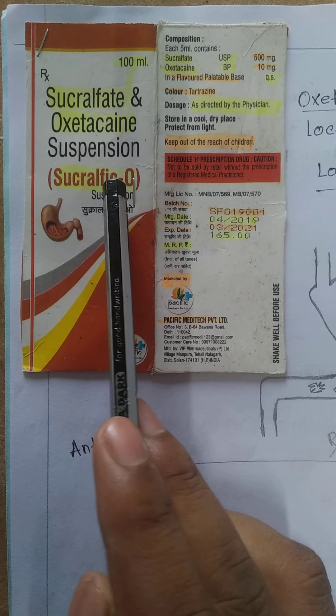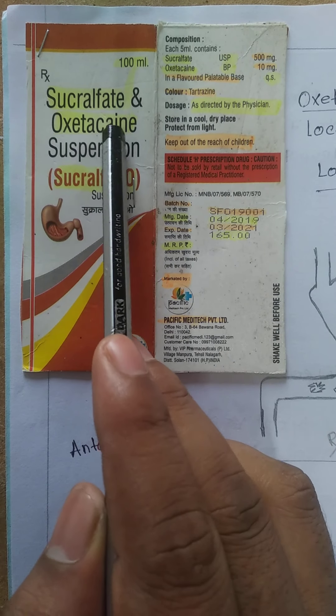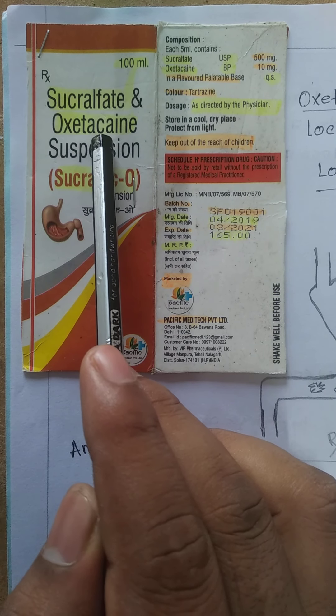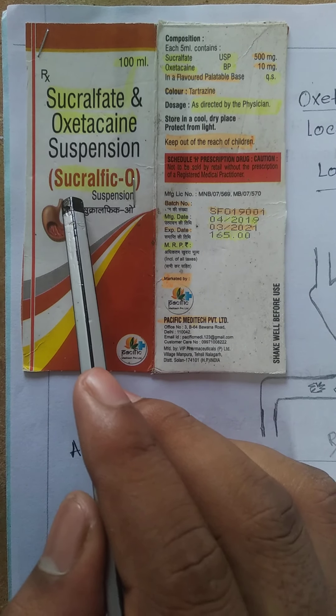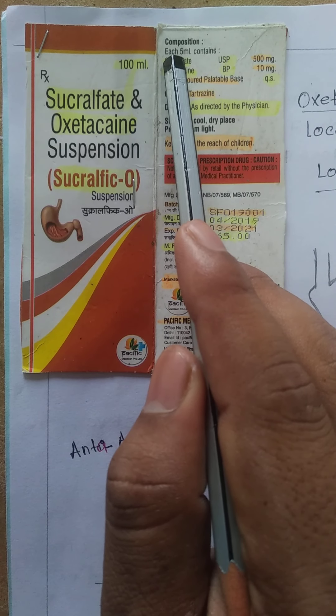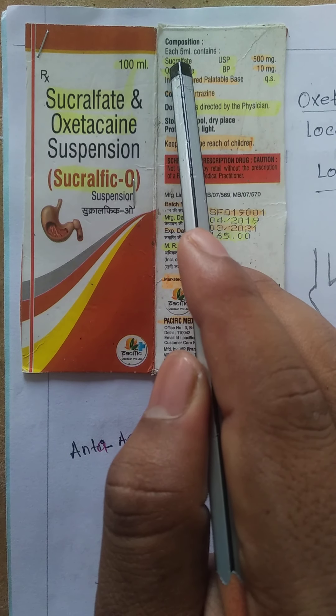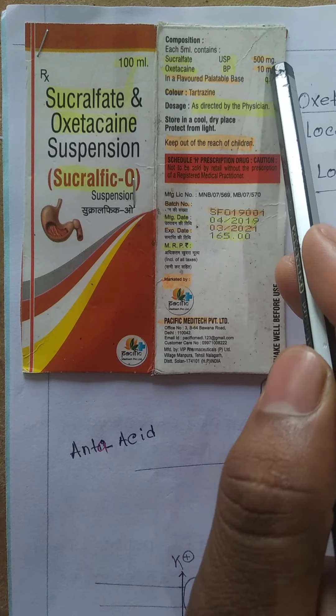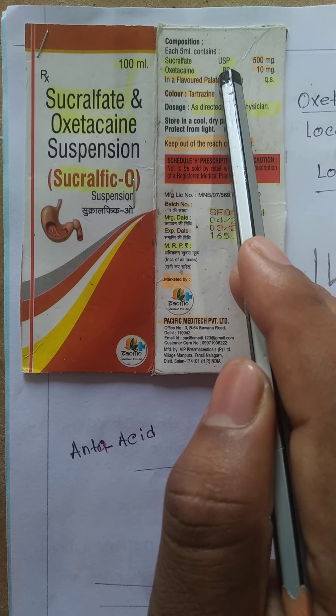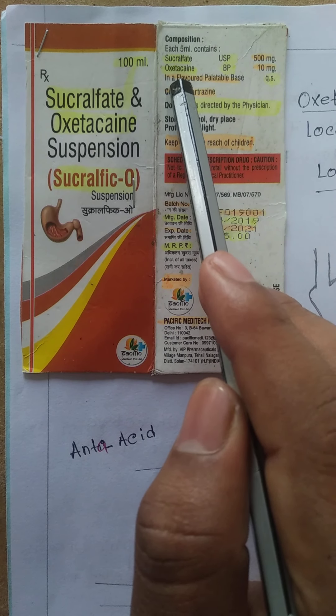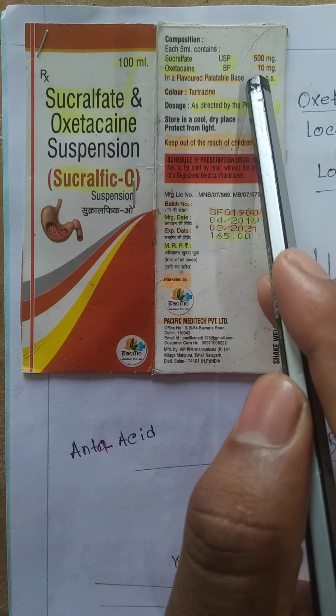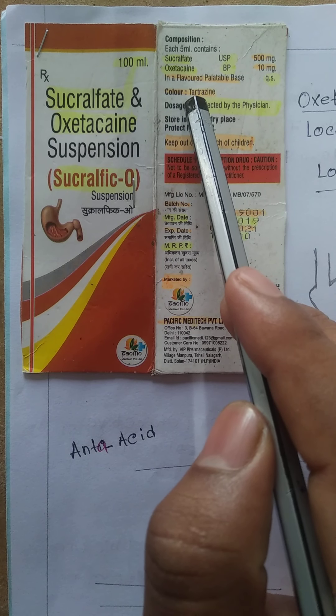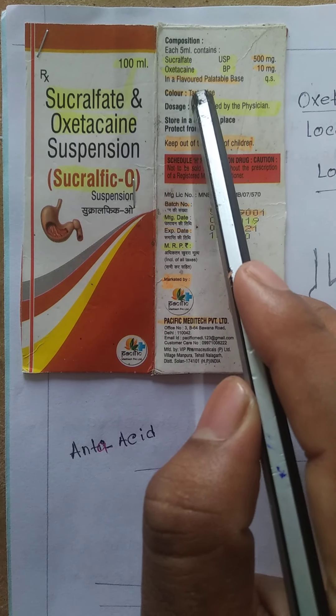Sucralfic O contains sucralfate plus oxetocaine. Looking at the composition, each 5ml contains sucralfate 500mg and oxetocaine BP (British Pharmacopeia) 10mg in a flavored palatable base with coloring agent tartrazine. This coloring agent is other than API, meaning other than active pharmaceutical ingredient.